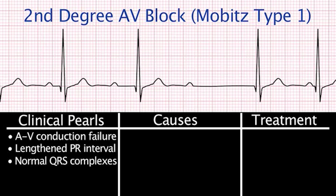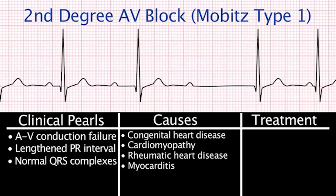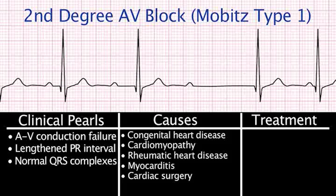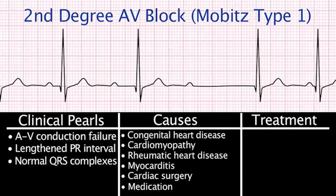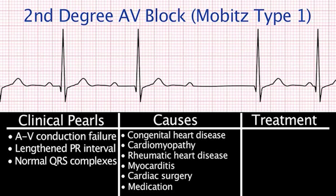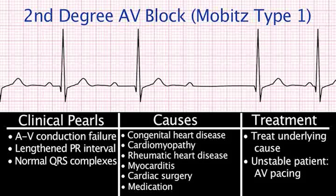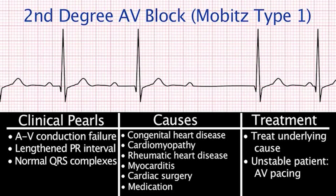Causes of Mobitz type 1 include congenital heart disease, cardiomyopathy, rheumatic heart disease, myocarditis, surgical intervention such as septal defect repairs, and medications such as digitalis or beta blockers. Treatment includes addressing the underlying cause. If the patient is unstable, AV pacing is indicated to restore synchrony between the atria and the ventricles.